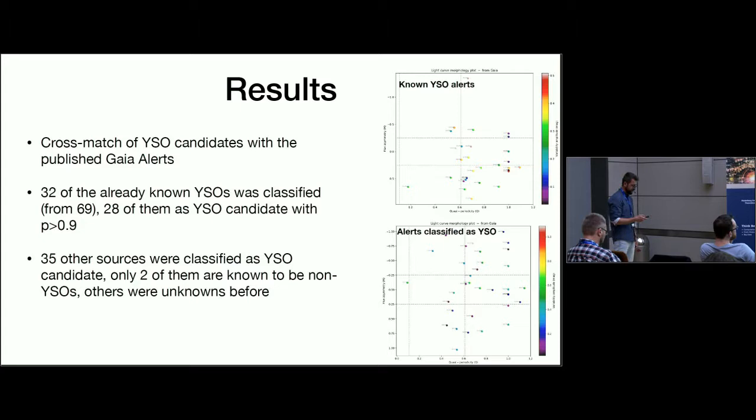I leave you with the future plans. The point is that we want to improve the algorithm which finds the alerts because there are some alerts where we don't want an alert, but there are some light curves where we want an alert but the system didn't publish anything. We have to improve it. Of course this is now time domain, not photometry. That's it, thank you.